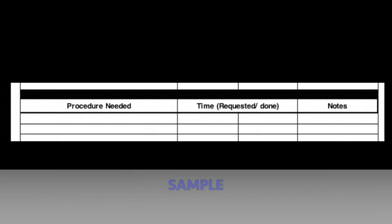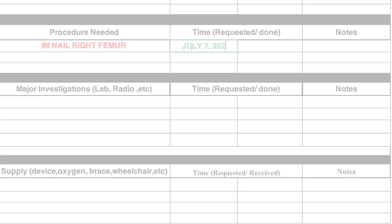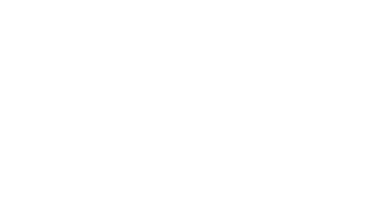Meanwhile, the procedure needed is vital to see if the patient will undergo minor or major surgeries. An example of this if the patient is for a procedure is IM male right femur. If the patient is not for a procedure, leave it blank. The major investigations for laboratories, radiology procedures, and others should be added too.